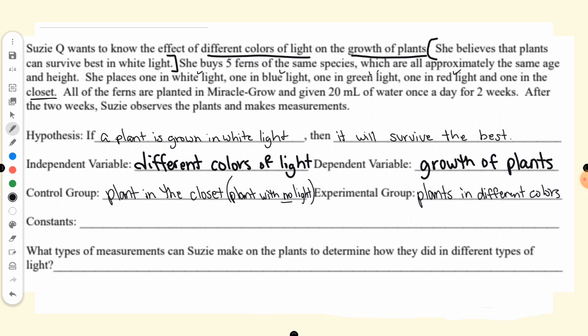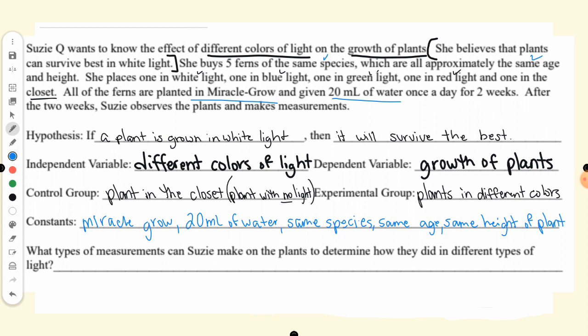The constants are going to be the things that stay the same — they are constant in every different group. Our constants: they all have Miracle-Gro, they all have 20 milliliters of water, they're all the same species of plants, and they're all the same age and height. Constants are important because then we know that the independent variable is what's making the difference, not something else that's giving them an advantage.